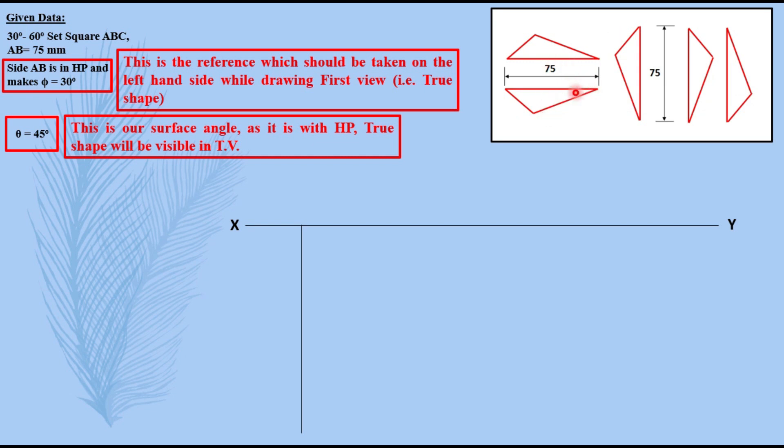Here I have some possible cases which can be the true shape but all of them are not correct. As you can see here, the reference which should be taken on the left hand side, that is side AB with whom the another angle is given, should be on the left. In these two diagrams on the left we have the corners not the side, and the same case is here. So these three are wrong.